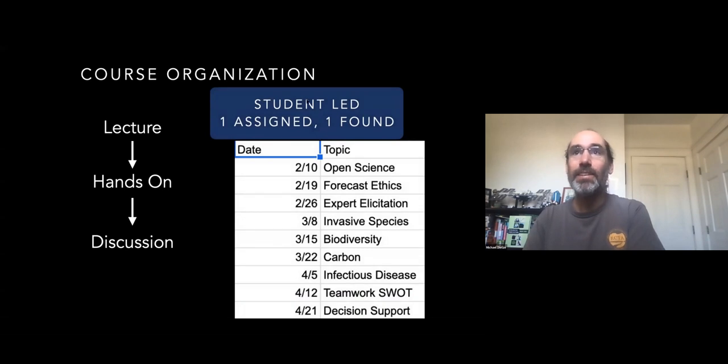The discussion part is all student-led. I always give them one paper. They also always have to find one other paper. The first three kind of set some foundational concepts of open science, forecast ethics, expert realization. Then there's a whole chunk of case studies learning about what's the state of the science in different parts of ecology and then kind of finishing up with the decision side of things. Of these, the forecast ethics is the one that's the most recent addition that I would love to expand upon. I think I've over the years become more and more convinced this is a really essential part of teaching forecasting.